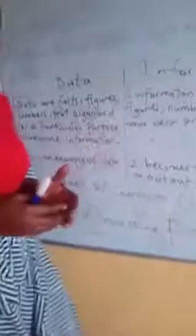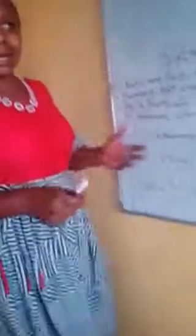Here we have data. We said that data are facts, figures, numbers, or text that are being organized in order to become information. Data could be numbers, it could be text, facts, and figures that are being organized in order to become information.